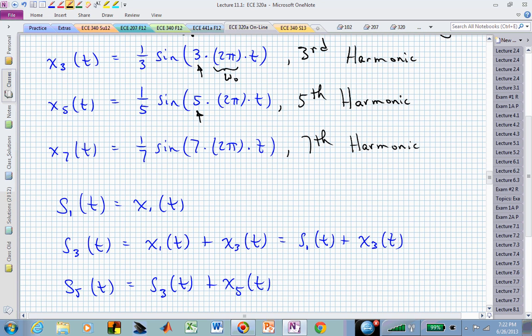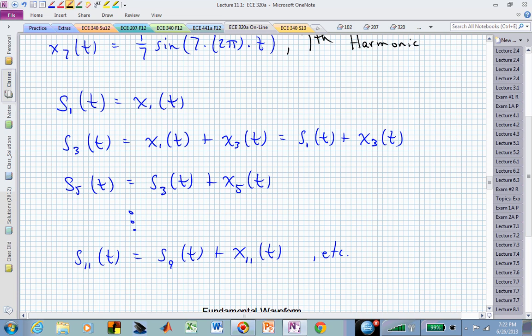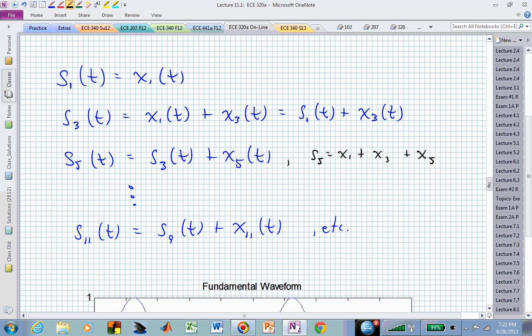What we now want to do is sum those pieces up. We'll call s sub 1 the first sum, or just the fundamental. s sub 3 will be including the fundamental and the third harmonic, or that's just s₁ plus x sub 3. Then s sub 5 is going to be s₃ plus x₅, so this is now the sum of the first five harmonics: x₁ plus x₃ plus x₅. And we'll even go all the way to s sub 11, meaning let's include all the odd harmonics up to the 11th.